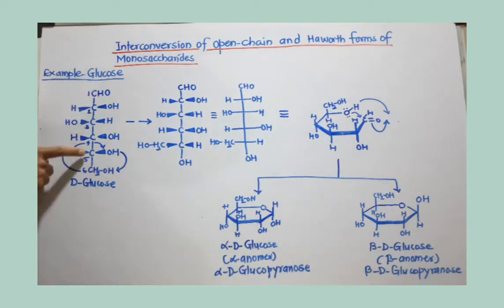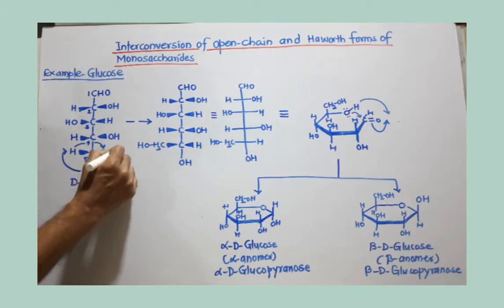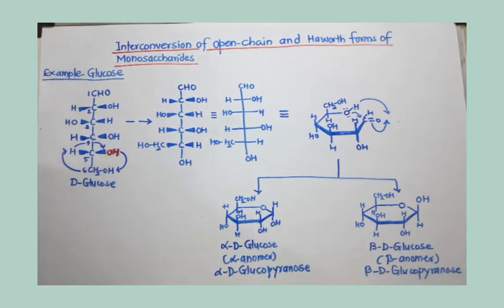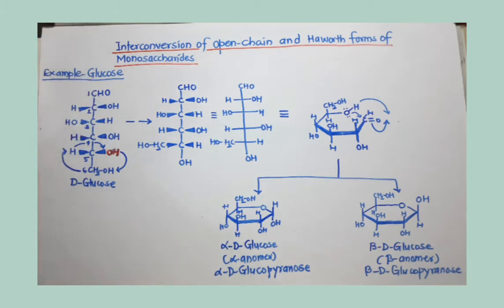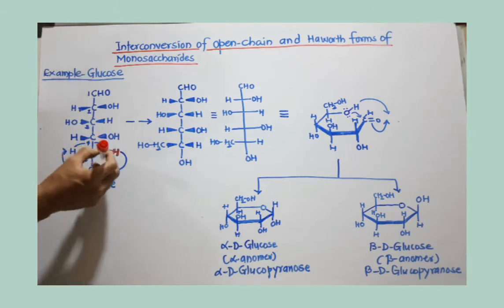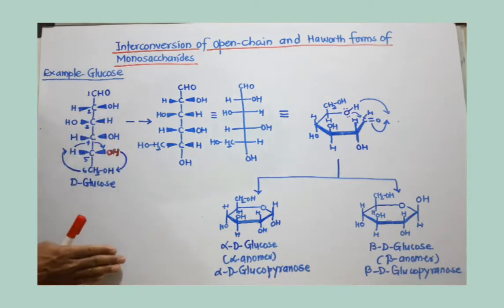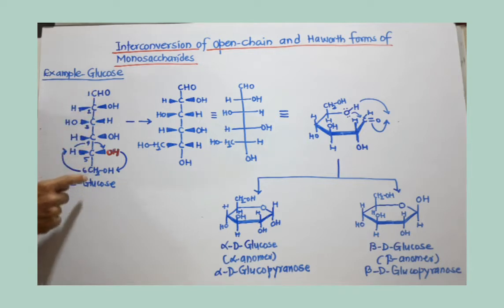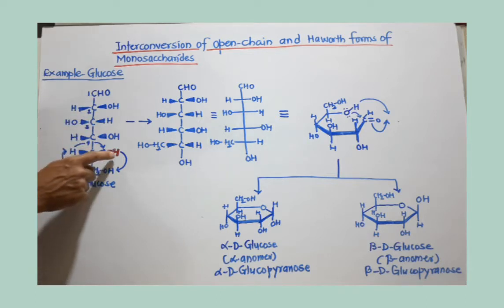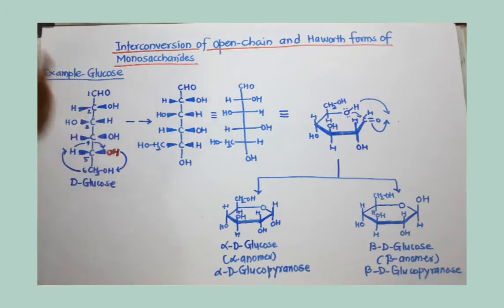You can see the hydroxyl group present at carbon number five — I will change the color of that hydroxyl group. This hydroxyl group is needed for the reaction. There is an intramolecular reaction to form a hemiacetal, so this oxygen and this carbonyl carbon must lie in one plane. But in this structure, the hydroxyl group is projecting above the plane while the carbon is on the plane, so that reaction is not possible. It becomes possible only when this hydroxyl group comes onto the horizontal line, at the position of this carbon.